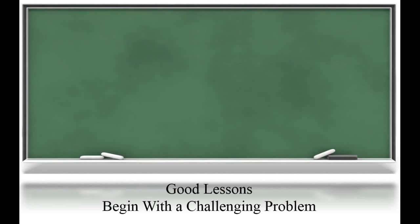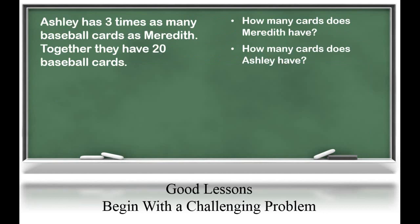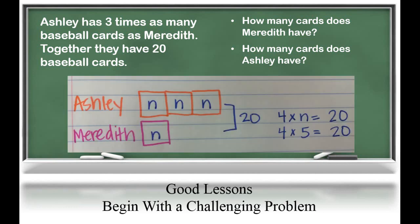Let's look at another problem. Ashley has three times as many baseball cards as Meredith. Together, they have 20 baseball cards. How many cards does Meredith have? How many cards does Ashley have? You can see this problem is similar because it still uses that three times as many, but this time we have more missing information. Again, we're going to use one group for Meredith and three groups for Ashley, because Ashley is three times as many as Meredith.